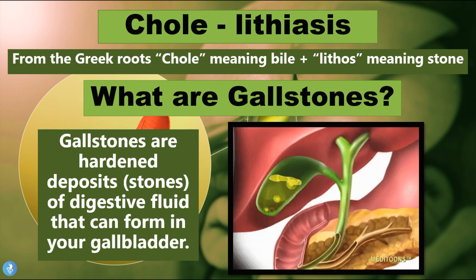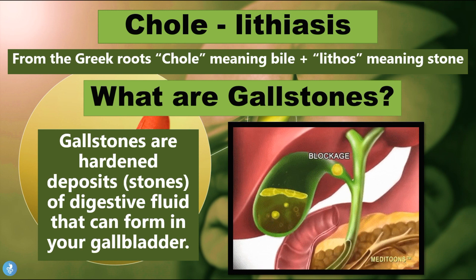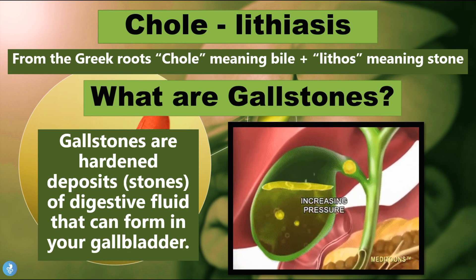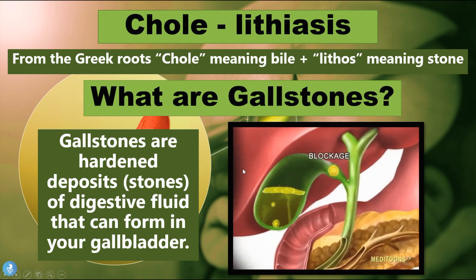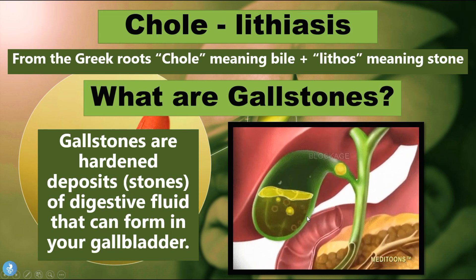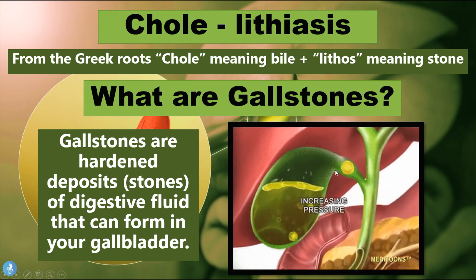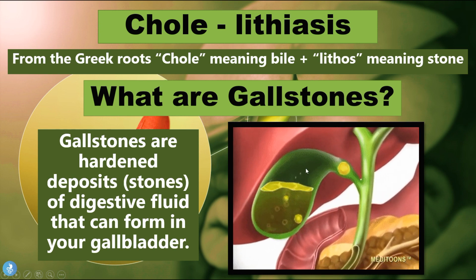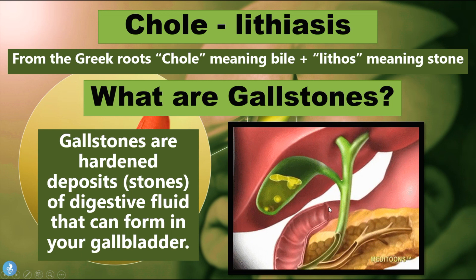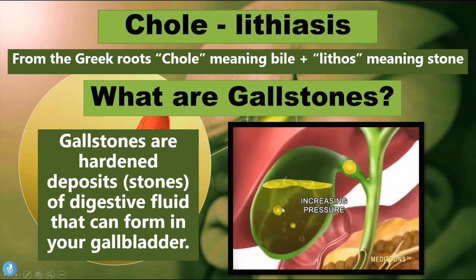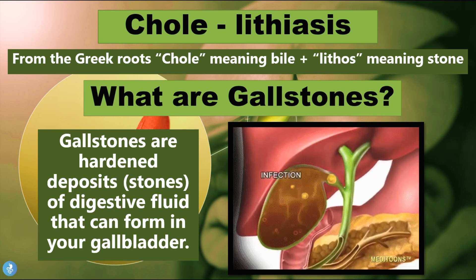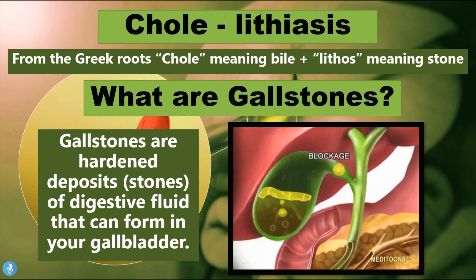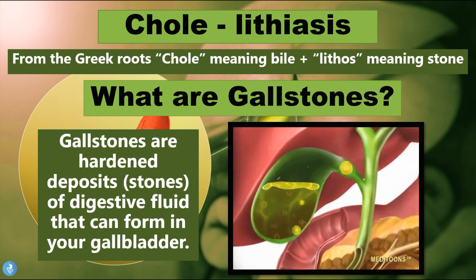So what are gallstones? Gallstones are the hardened deposits — the stones — of digestive fluid that can form within your gallbladder. The gallbladder stores the bile, and because the bile is stored in here for long periods of time, these little hardened deposits develop from the bile fluid. This is what the gallstones are: hardened deposits of digestive fluid found within the gallbladder.